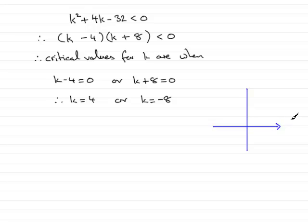Remember that if we're sketching the graph of y equals k squared plus 4k minus 32, then this axis isn't the x axis, it's a k axis.